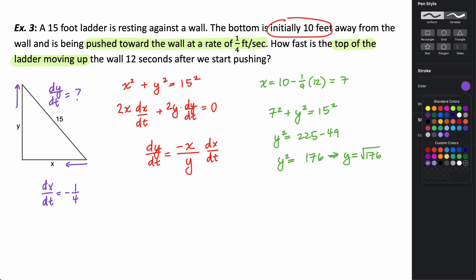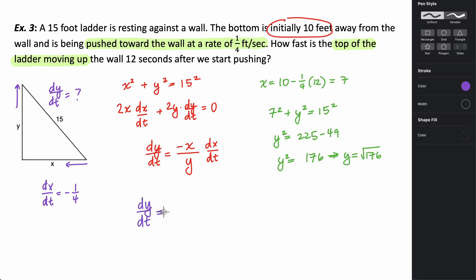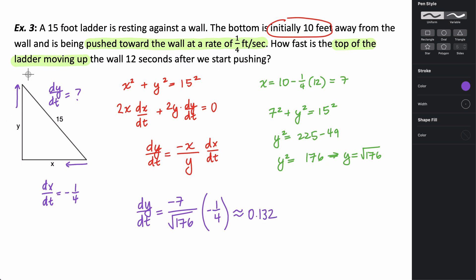Now I have all the information I need to plug in and find dy/dt. The derivative of y with respect to t equals negative 7 divided by the square root of 176, times dx/dt which is negative one-fourth. Plugging this into the calculator, the rate at which y changes with respect to time is about 0.132 — positive, since a negative times a negative is positive. The units are feet per second.